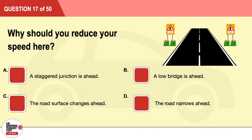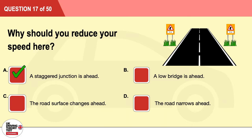Question 17: Why should you reduce your speed here? A: A staggered junction is ahead. B: A low bridge is ahead. C: The road surface changes ahead. D: The road narrows ahead. The correct answer is A: a staggered junction is ahead.